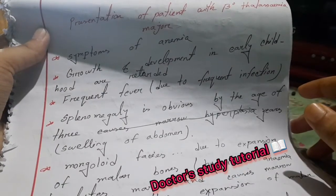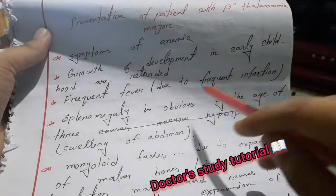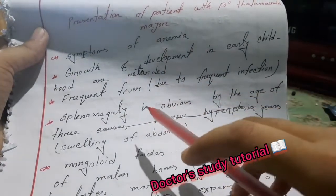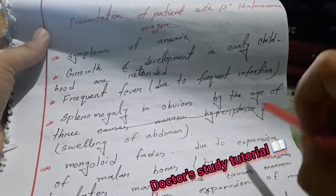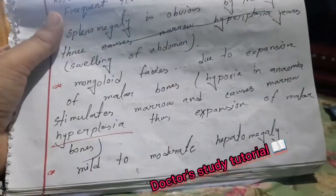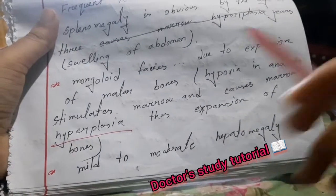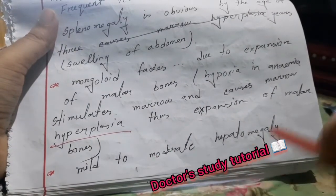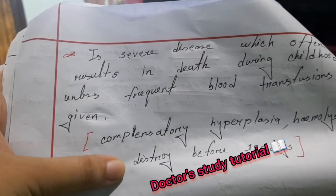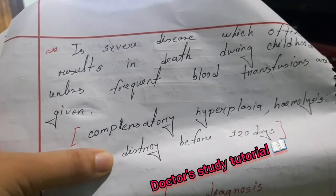The clinical presentation of a patient with beta thalassemia major includes: symptoms of anemia; growth and developmental retardation in early childhood; frequent fever due to infections; splenomegaly obvious by the age of 3 years; swelling of the abdomen; mongoloid facies due to expansion of the malar bone; and mild to moderate hepatomegaly. In severe disease, death during childhood often results unless frequent blood transfusions are given.